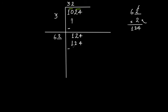Now we know that this is a square number. So 32 is the square root of 1024.